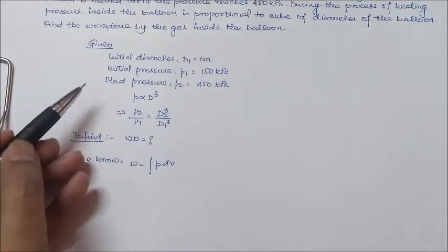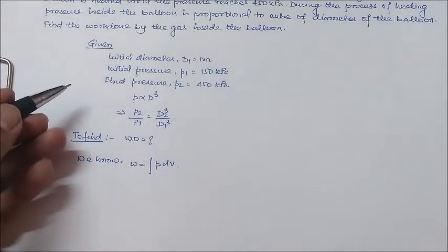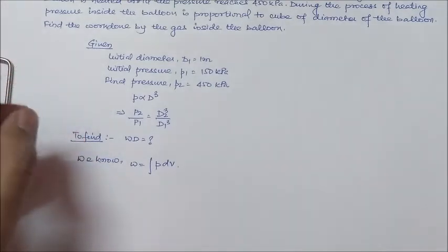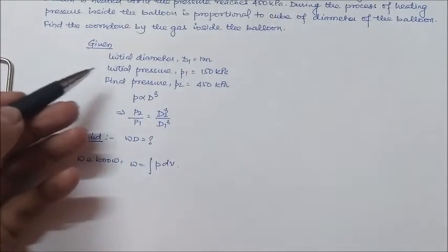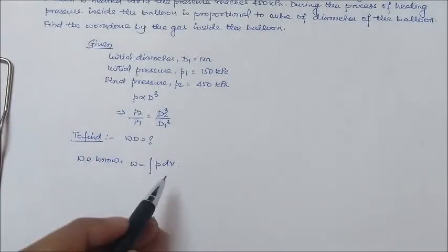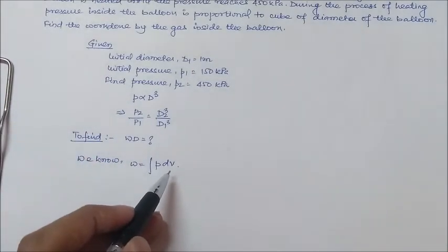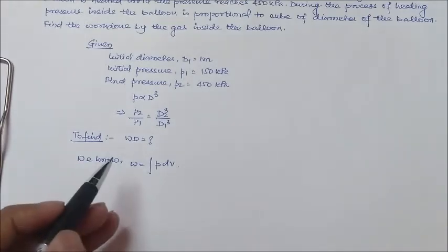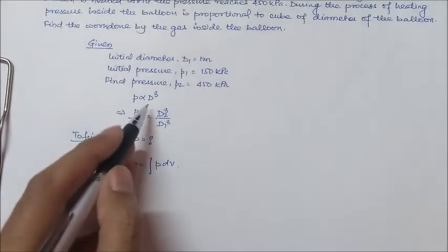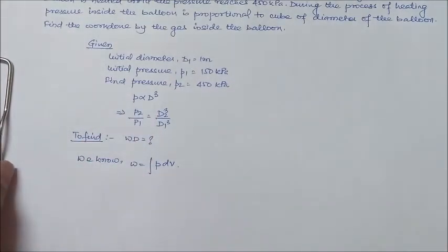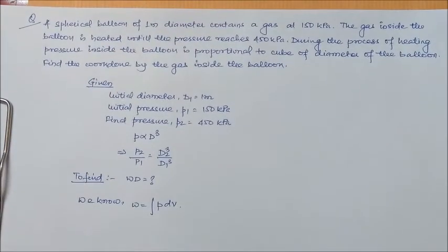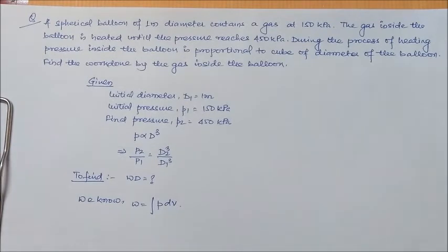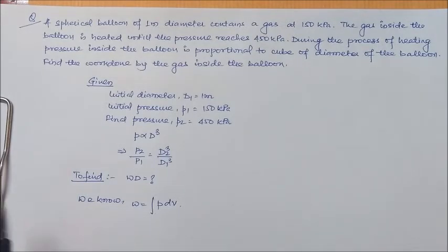Now there is no relation or no value given of volume in terms of anything which is given in the question, so we have to find out something that will relate the volume. So you can see this pressure can be written in terms of diameter. Again we know that this is a spherical balloon and the volume of a spherical balloon is 4 by 3 pi r cube, which means volume will be related to diameter. So we can replace both the things in terms of diameter.